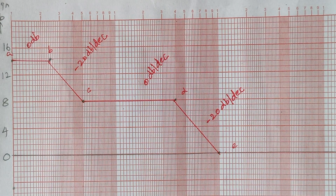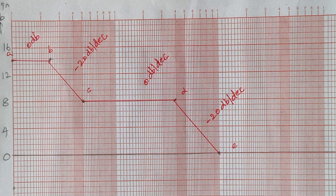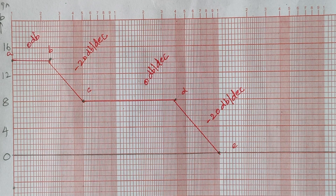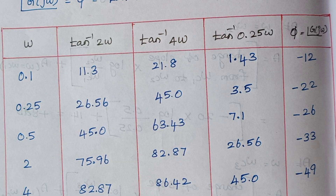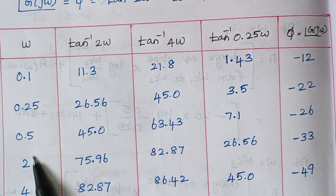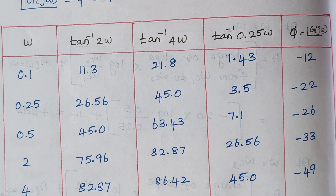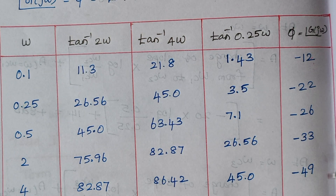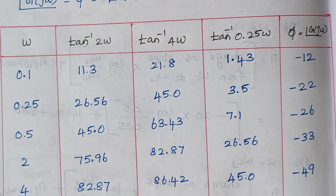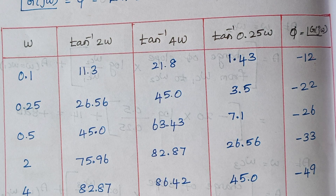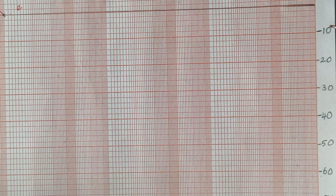So finally we have drawn our magnitude plot. Next we are going to mark our phase plot. These are all the frequency ranges and their respective phase angles. Depending upon the value of the phase angles, we have to select the scale on the semilog sheet.